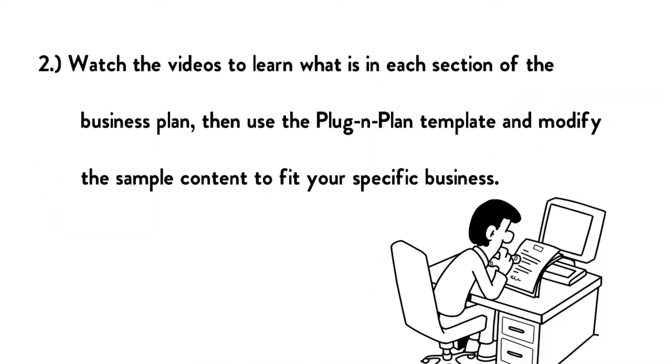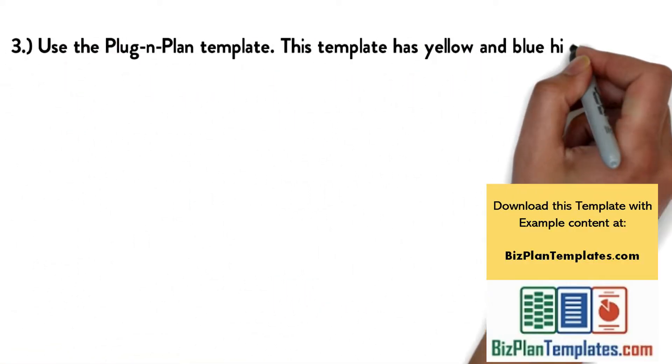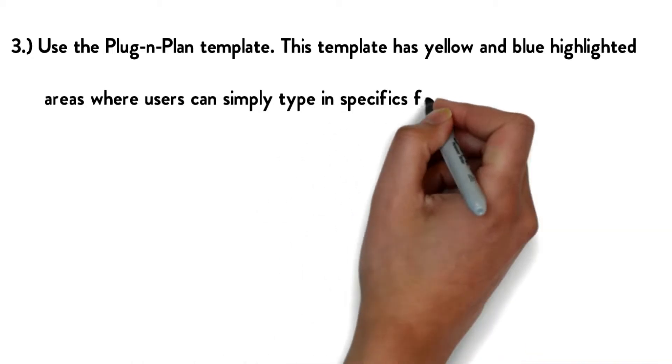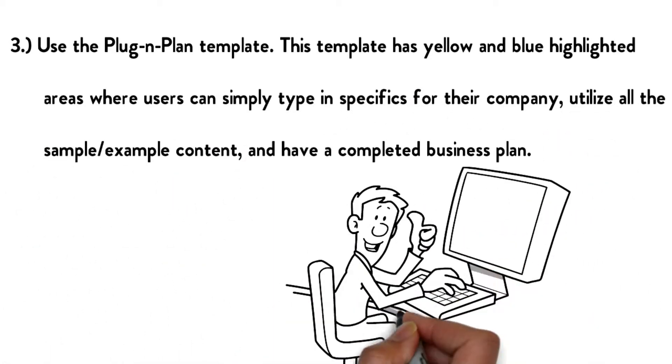Option three: Use the plug and plan template. This template has yellow and blue highlighted areas where users can simply type in specifics for their company, utilize all the sample and example content, and have a completed business plan.